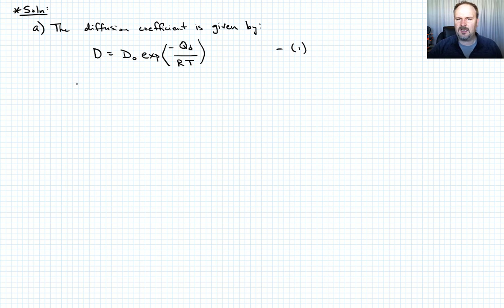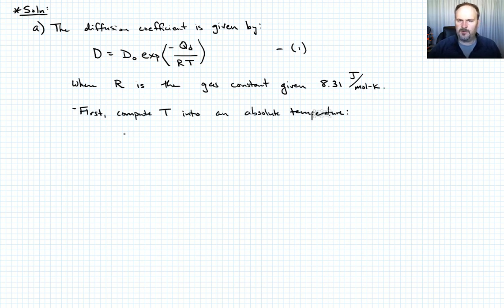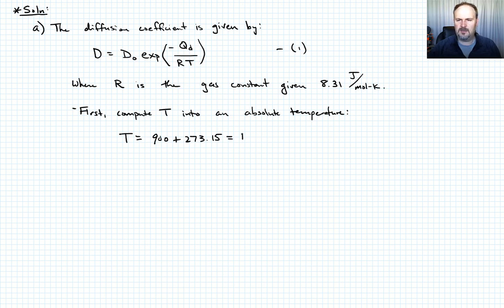Here R is the gas constant, given by 8.31 joules per mole per degree Kelvin. The first thing we need to do is convert the temperature of interest, 900°C, into an absolute temperature. So T equals 900 plus 273.15, giving us 1173.15 Kelvin.